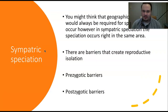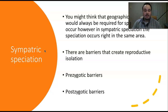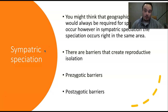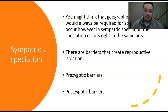You might think geographic barriers are always required for speciation, but with sympatric speciation — meaning 'same fatherland' — speciation occurs between individuals living in the same area. There are still barriers that create reproductive isolation, and the first category is prezygotic barriers — barriers that occur before a zygote is created. Remember, a zygote is formed when a sperm and an egg fuse. Then there are postzygotic barriers, which are barriers after a zygote has been formed.